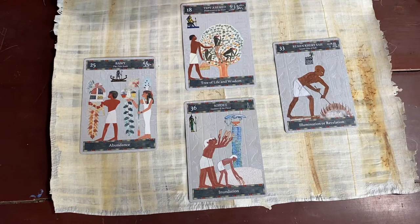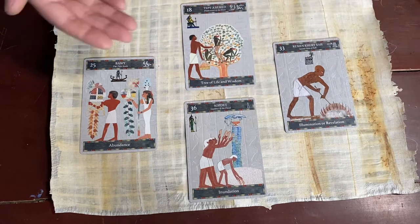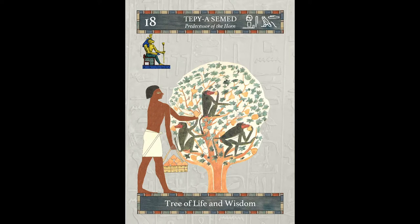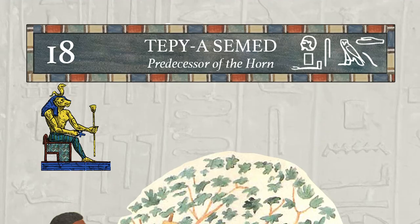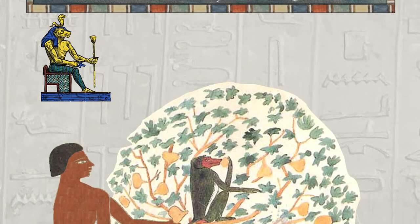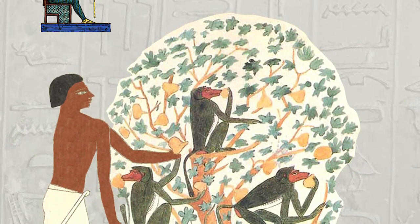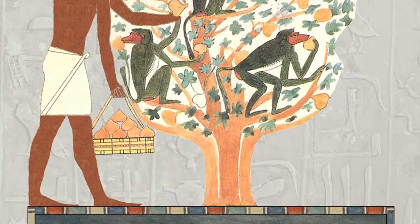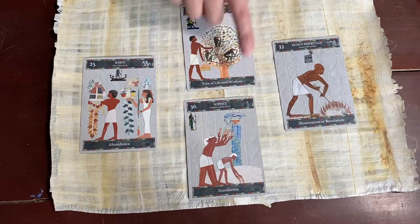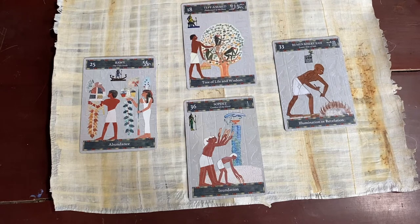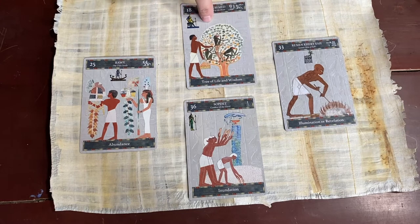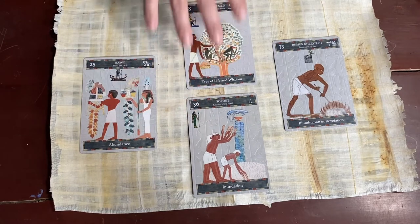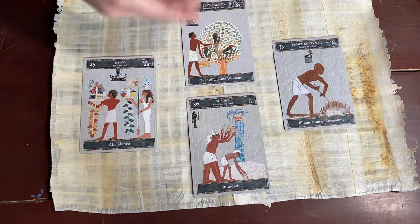Moving up to the culmination — the highest point, the best possible outcome of this trip — it's Tepeas Semed, the predecessor of the horn, which stands for tree of life and wisdom. This is really interesting because my son is turning 16. I'm trying to impart on him that he needs to get his driver's license and learn how to drive, so I'm going to be teaching him wisdom and life skills. But I also haven't seen him in five or six years, so there could be information I'll learn from him too. It's in the culminating position, so it's generally going to be a positive outcome.